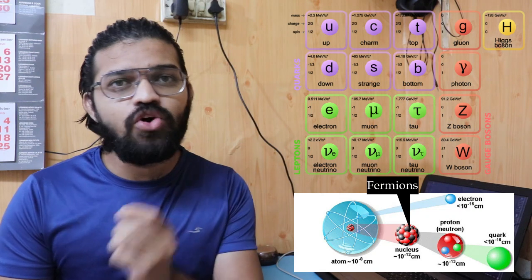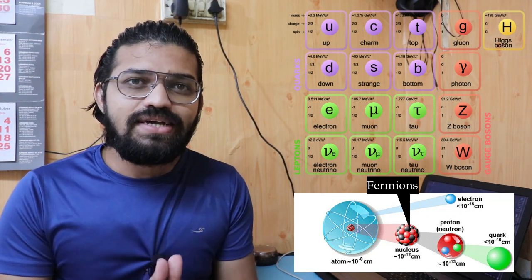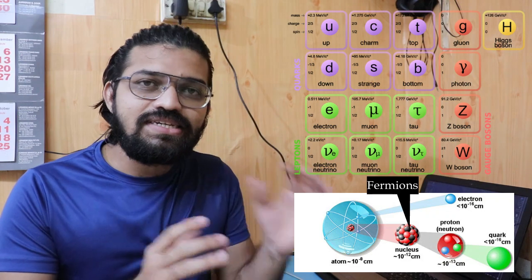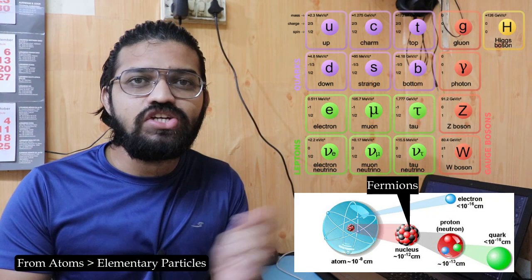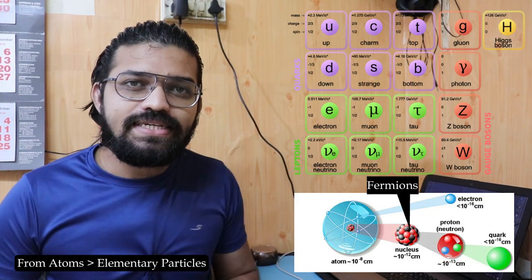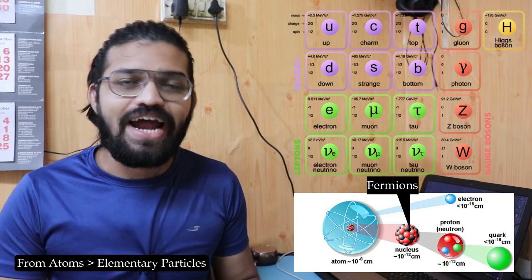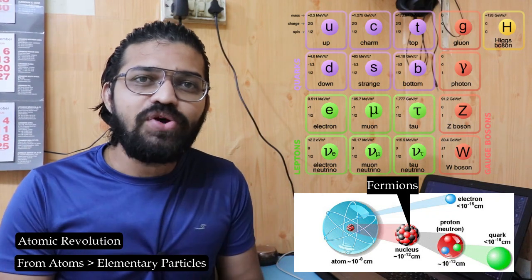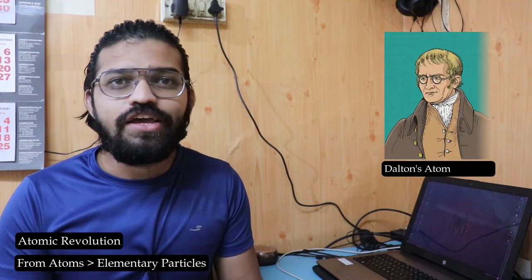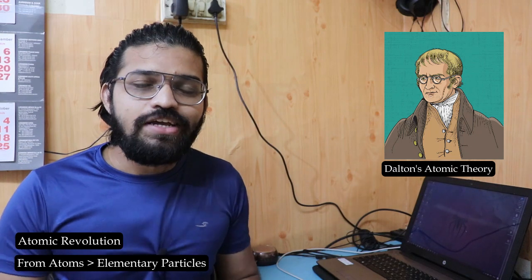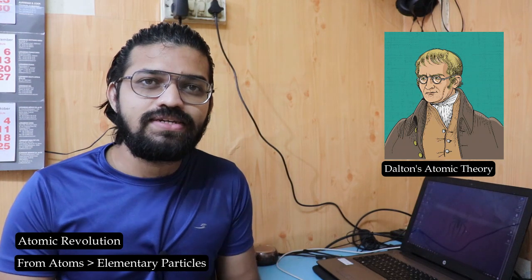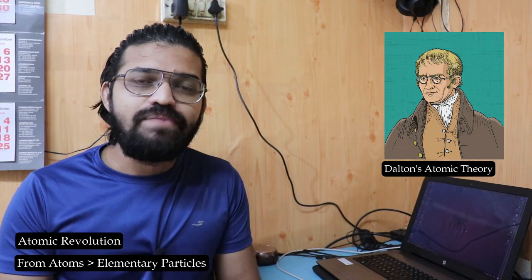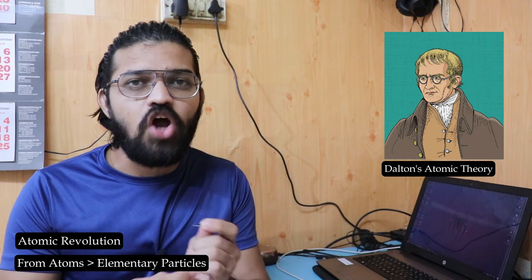Let's talk about the discovery of atoms and the stages up to the elementary particles. I have created a playlist named Atomic Revolution, and in this particular video we are going to start with the beginning — Dalton's Atomic Theory. In 1808, Sir John Dalton discovered the atomic theory and postulated six points regarding atoms.